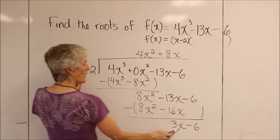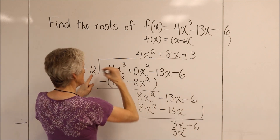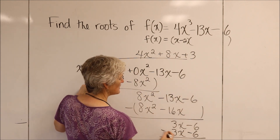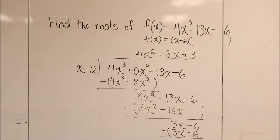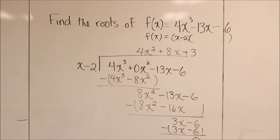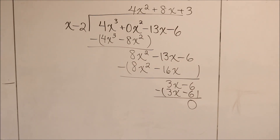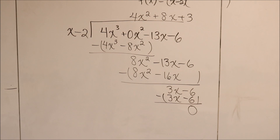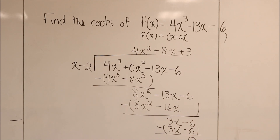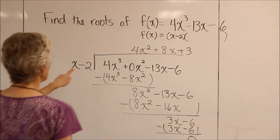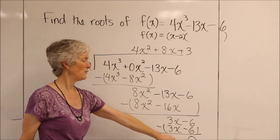x times what is 3x? That would be plus 3. 3 times x is 3x, 3 times negative 2 is negative 6. And of course I get zero as my remainder. If you didn't get zero as a remainder, that means you did something wrong with your long division, because you know that x minus 2 is a factor — and if x minus 2 is a factor, it's going to divide in evenly, meaning with no remainder.